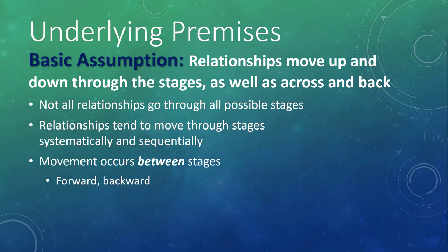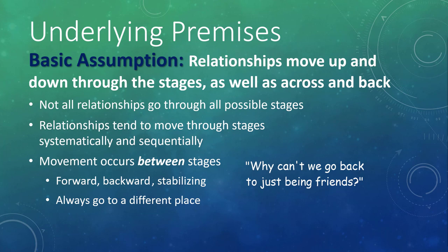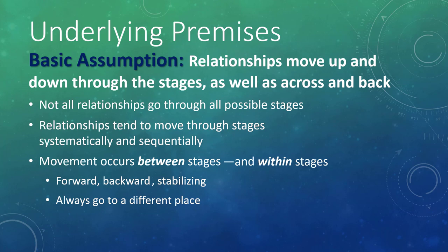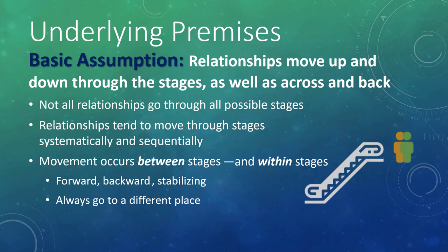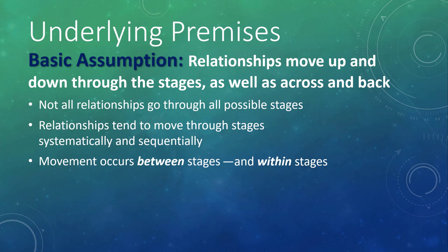If you are moving upward and get off on a floor, that's fine—as long as you aren't making a commitment to moving forward or backward. Knapp says you are stabilizing. But if you move horizontally over to the down escalator, you are starting to move backward, away from intimacy. However, even when you return to a previous stage, you will always go to a different place. You can't go back to exactly the way you were. Even if the 'why can't we go back to being just friends' works, the friendship will be different. And movement also occurs within stages—you don't just get off on a floor and stand there. All your experiences and interactions will color future experiences, so even when you are still on the same floor, you are in a different place.